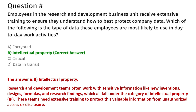The correct answer is option B, intellectual property. Research and development teams often work with sensitive information like new inventions, designs, formulas, and research findings, which all fall under the category of intellectual property (IP). These teams need extensive training to protect this valuable information from unauthorized access or disclosure.